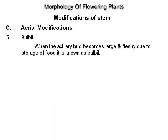Bulbil: when the axillary bud becomes large and fleshy due to storage of food, it is known as a bulbil, example Dioscorea.